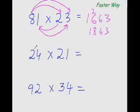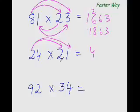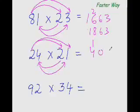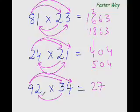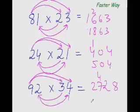Next one: 2×2 is 4. 2×1 is 2 and 2×4 is 8 — 8 plus 2 is 10. And 4×1 is 4, so the answer is 504. Next one: 9×3 is 27. 9×4 is 36 and 3×2 is 6 — 36 plus 6 is 42. And 2×4 is 8, so the answer is 27 plus 4 carry is 31 — 3128.